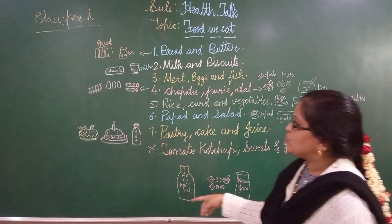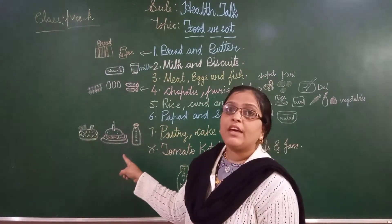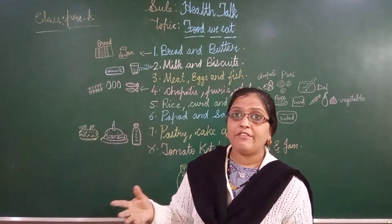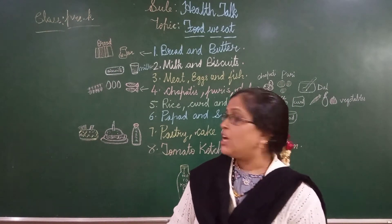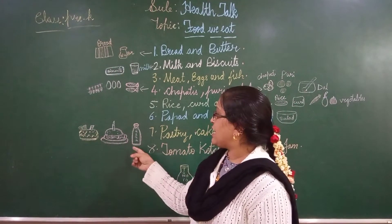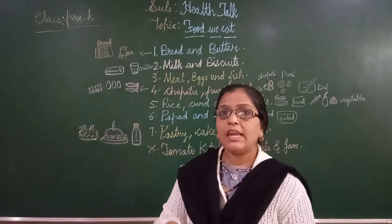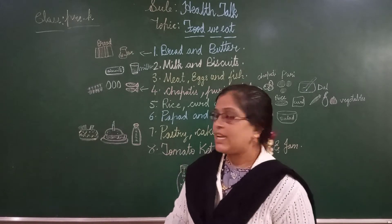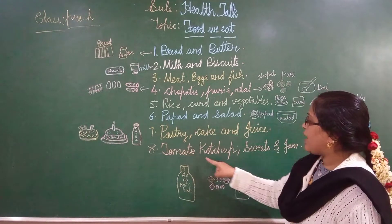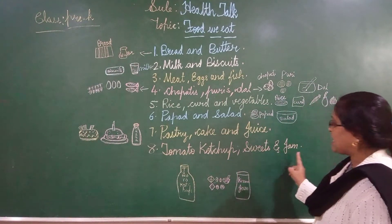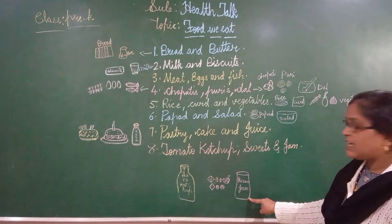Pastry, cake and juice — when are these used? When it is a birthday party, when you are going to your friend's or relative's birthday parties, you will be having pastry, cake and juice. Otherwise you can go to any bakery if you want, but only sometimes. Then tomato ketchup, sweets and jam.